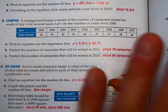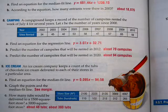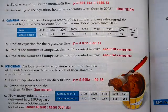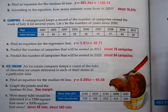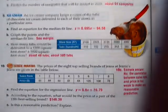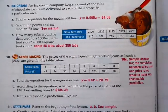Great number of campsites to be rented in 2012, about 70. 2020, about 94. And again, these might be off a little bit, depending upon how well your line really fit it.